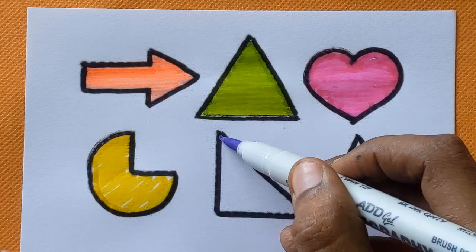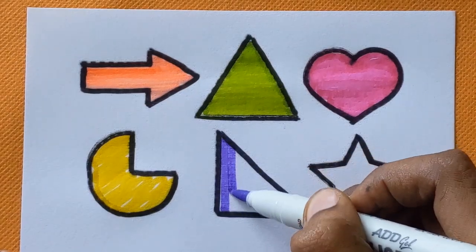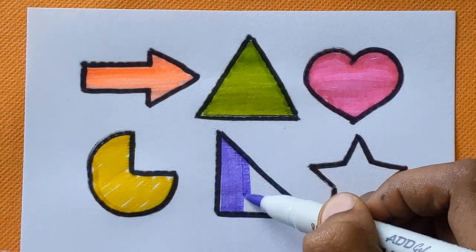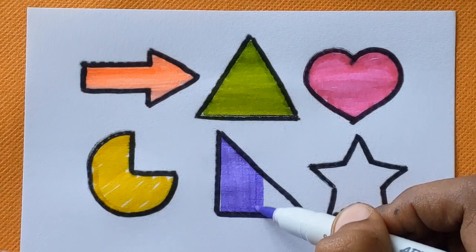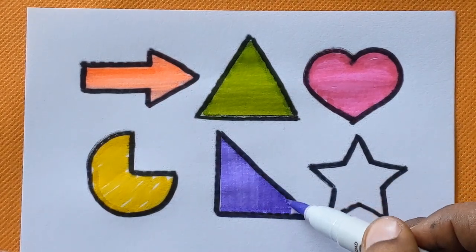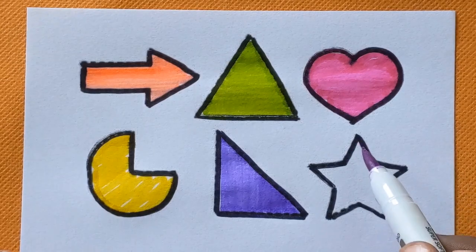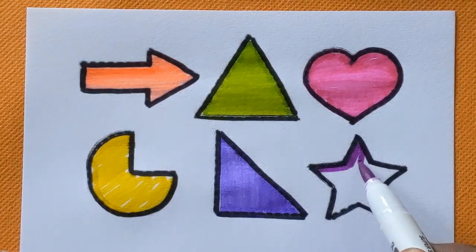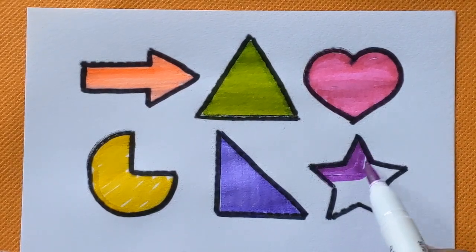Next is right angle triangle, violet color. And this one is star with a purple color.